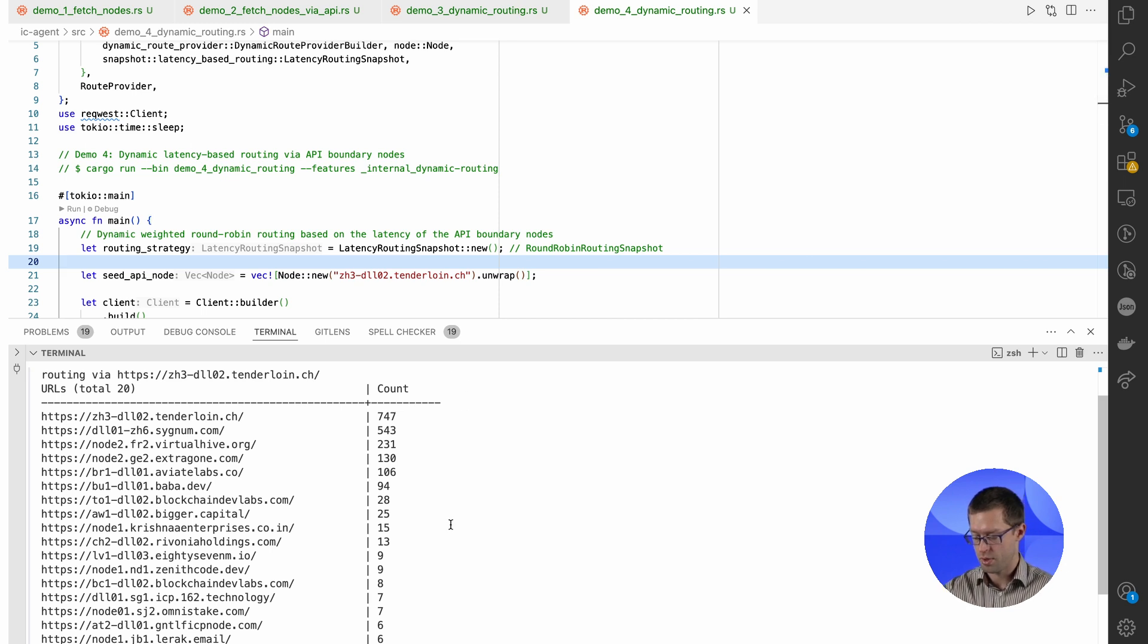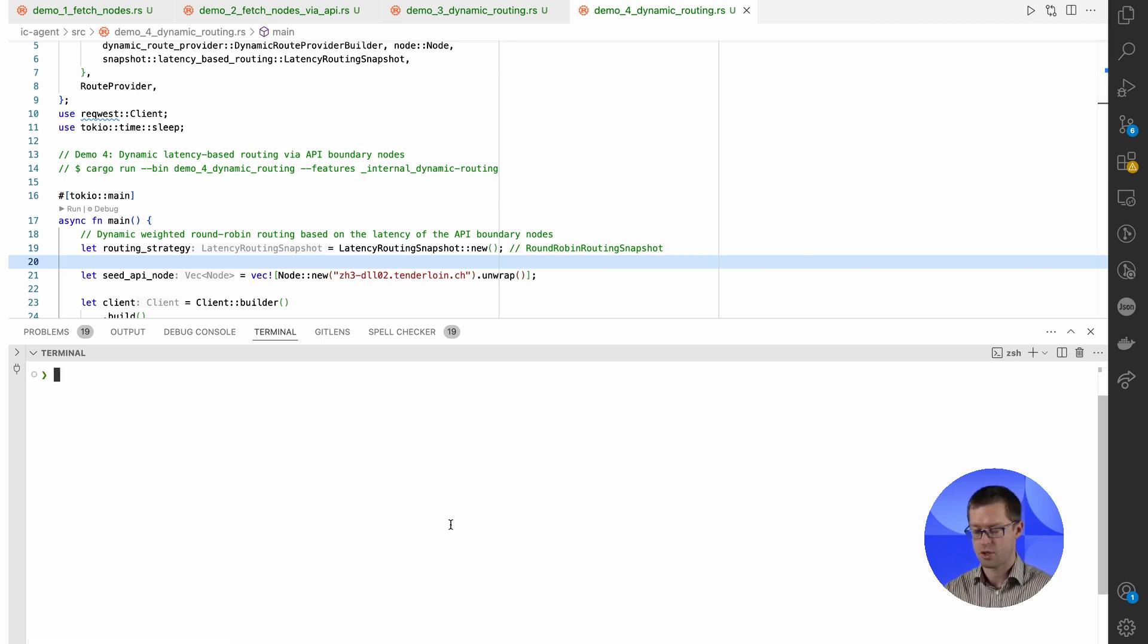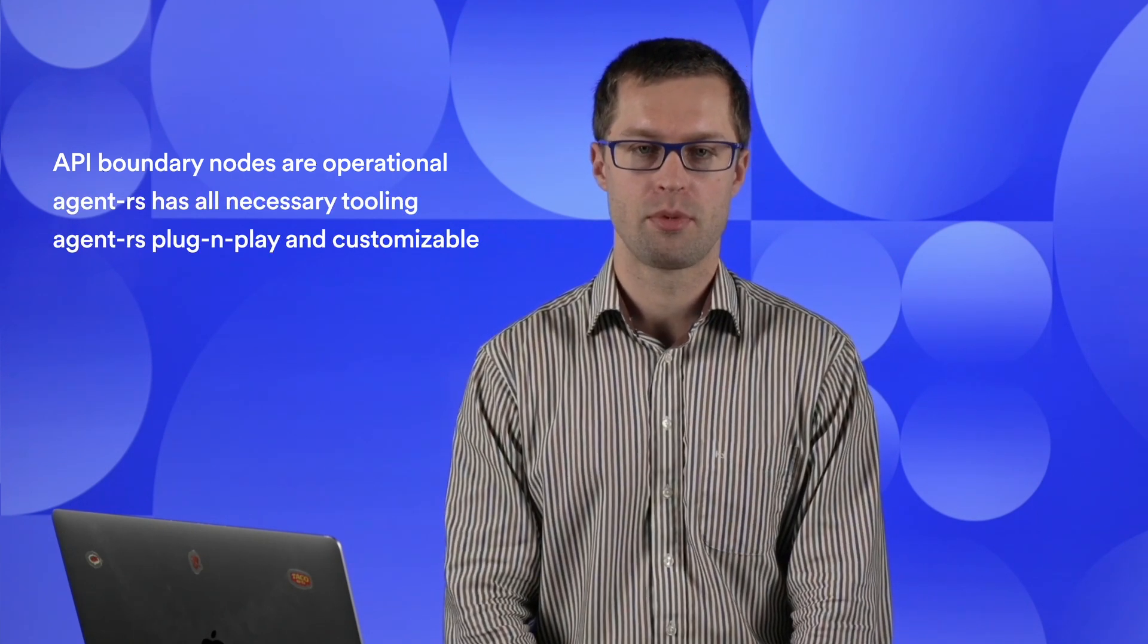Now, we hope that this extension to the IC agent will make your experience with the API boundary node smooth and convenient. Decentralized API boundary nodes are now available in the IC ecosystem. You can use them. You can use our services which will help you with dynamic routing via those API boundary nodes. Have fun building new dApps and see you soon. Bye.